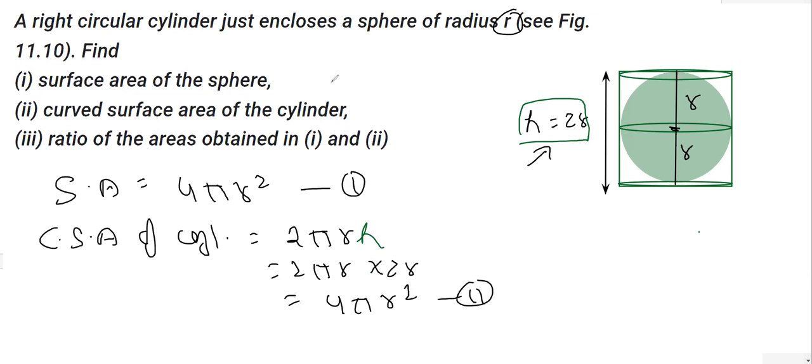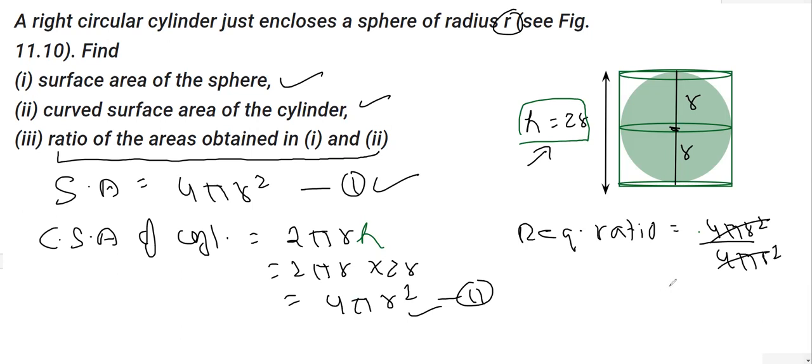So we got these two. In the next part they are asking to find the ratio of the areas obtained in the first and the second. So the required ratio in this case will be this divided by this: 4πr² divided by 4πr². As you can see they are the same values, so we'll be writing 1 over 1 or 1 is to 1, and that should be the answer for this part.